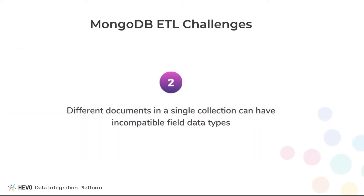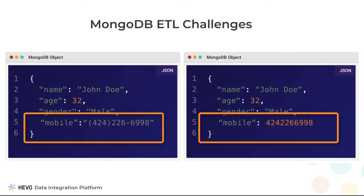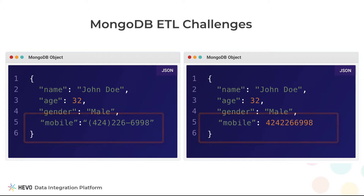Two documents in a single MongoDB collection can have fields with values of different data types. For example, the field mobile can be both a string and a number in different Mongo documents. Although this is a completely valid state in MongoDB, you will necessarily have to convert it into a string or a number in Redshift, and this becomes a real challenge.